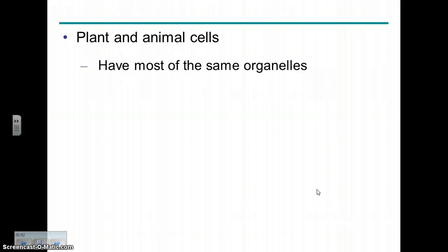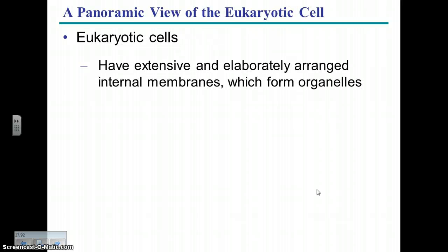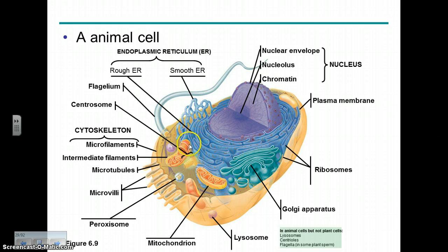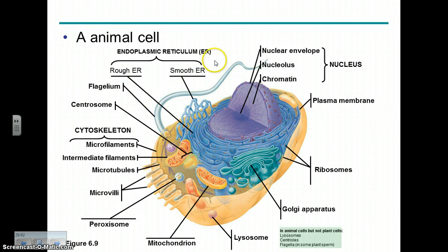Eukaryotic cells have lots of internal membranes that add complexity and have various jobs. In a typical animal cell we have the nuclear membrane, endoplasmic reticulum, the Golgi, and mitochondria — the powerhouses of the cell. There are also lots of ribosomes, the centrosome involved with producing microtubules for cell division, and in some animal cells, a flagella.